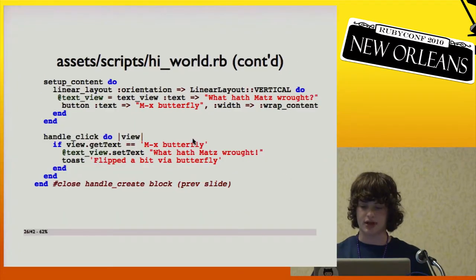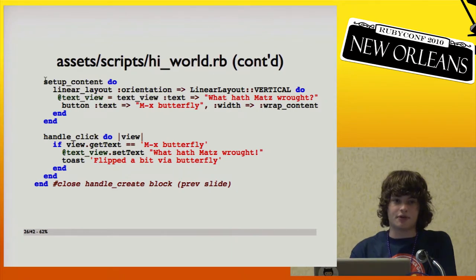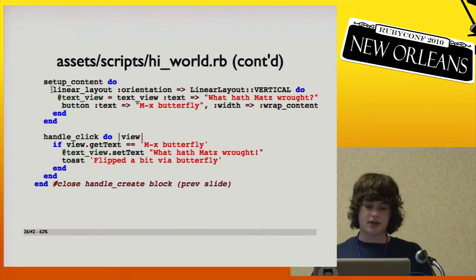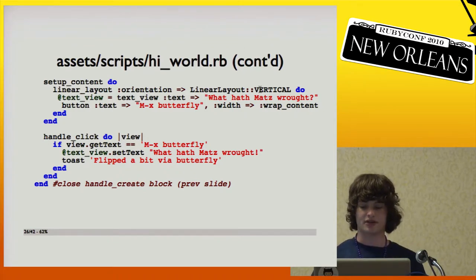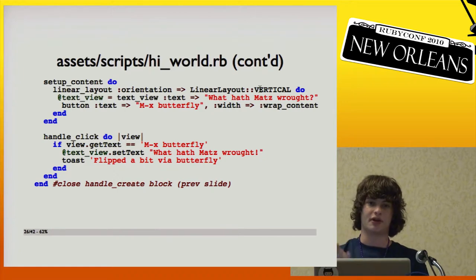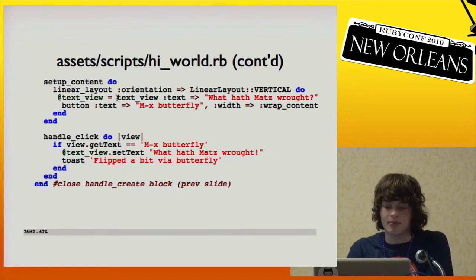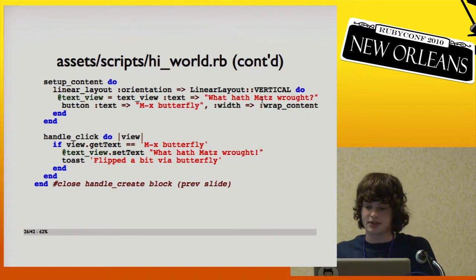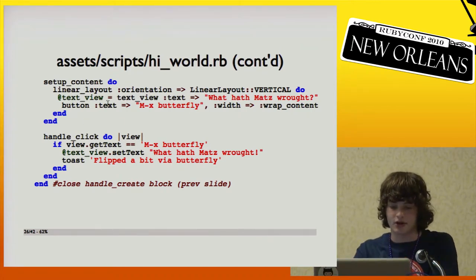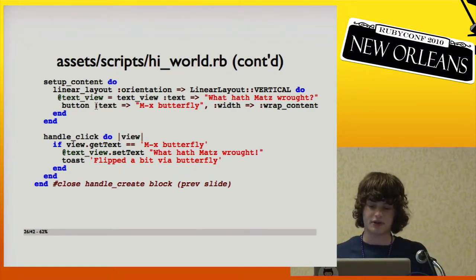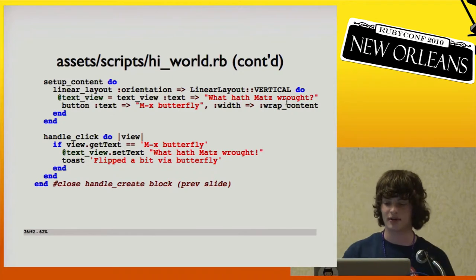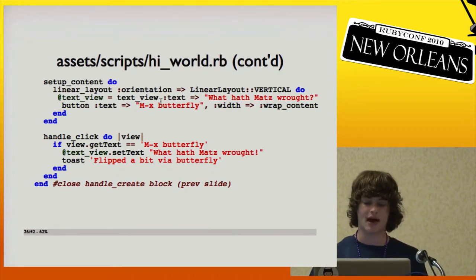Getting into the more interesting stuff: setupContent is where you put all the content that will be there when you start. The outermost view is a LinearLayout, which has other views within it and places them linearly — in this case vertical, so one on top of the other. We make a TextView and stash it in an instance variable. Then there's also a button with text 'MXPyder5' — that's a reference to an XKCD comic — with wrap_content meaning the width of the button matches the text.